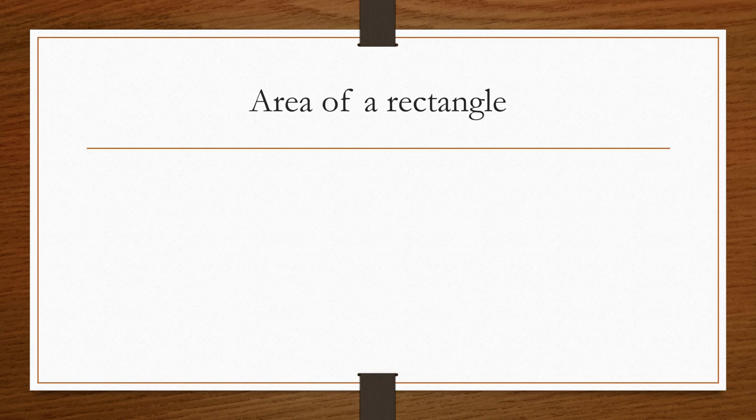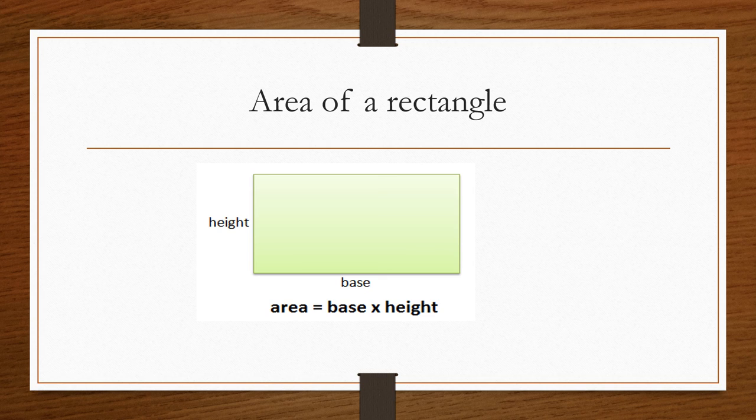The formula to calculate the area of a rectangle is base into height, similar to that of the square. But in case of a square, the base and height are the same, so it's a into a or a squared. But in case of a rectangle, the base and the height are of different dimensions, so the formula for a rectangle to calculate area is base into height.